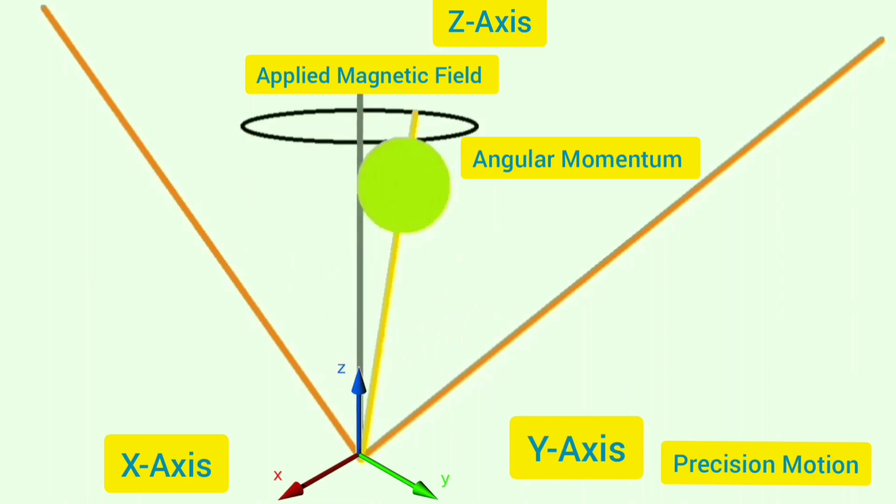With a resonance angular frequency called the Larmor frequency, due to free induction decay, the proton then slows down.